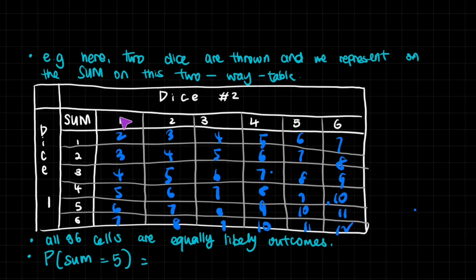As you can see, I just added up every single possible outcome. There are many, many outcomes. Actually, there are six times six equals 36 cells.